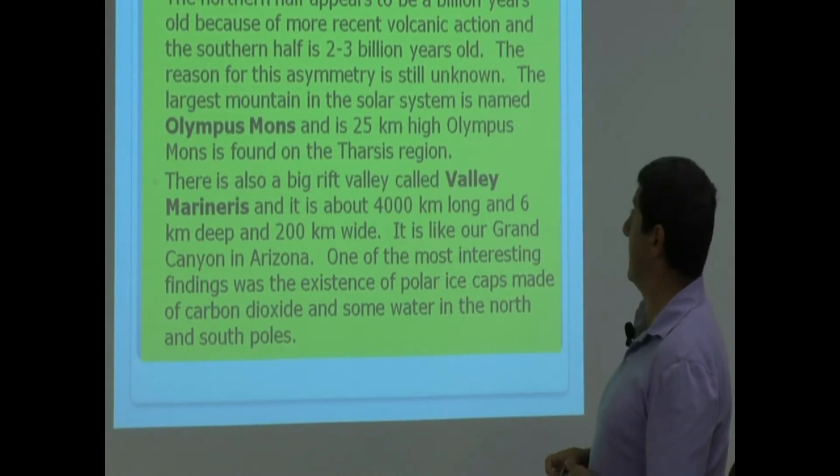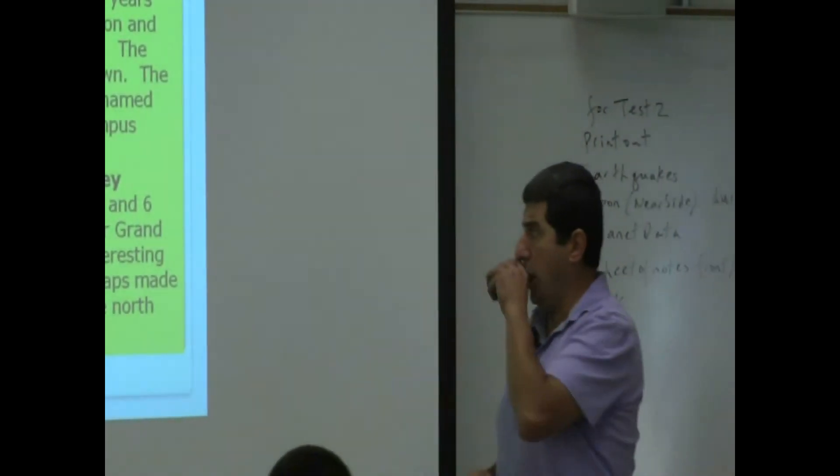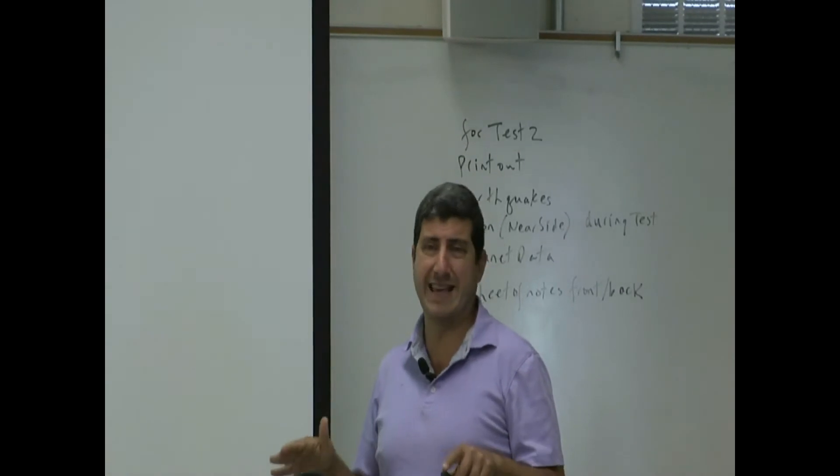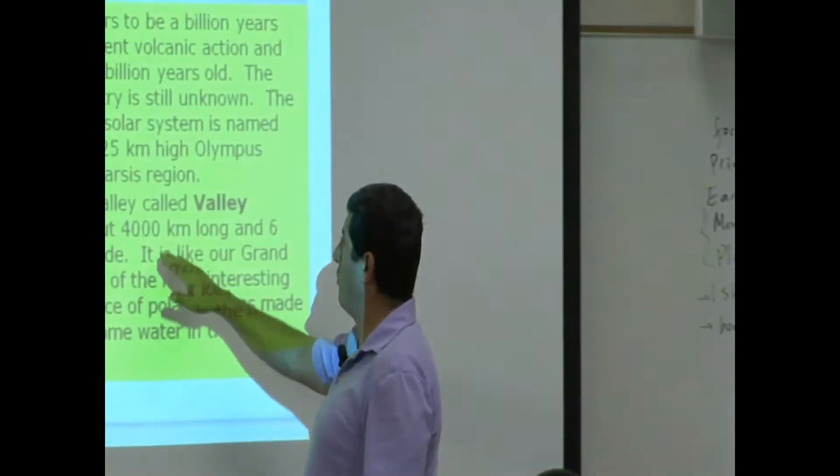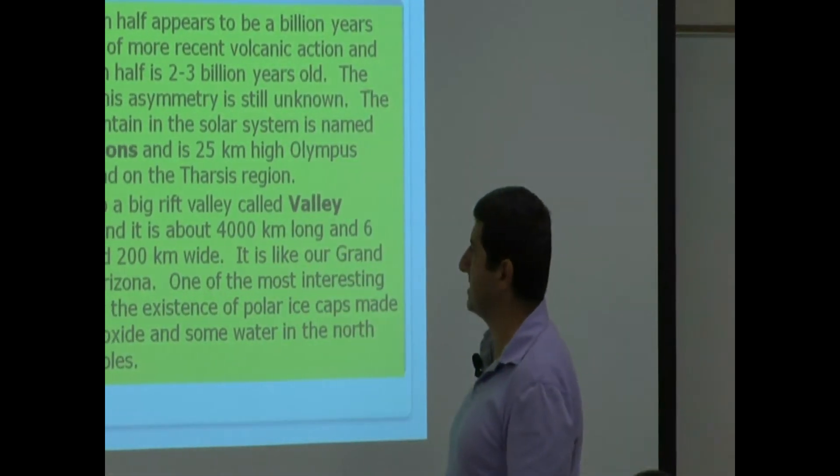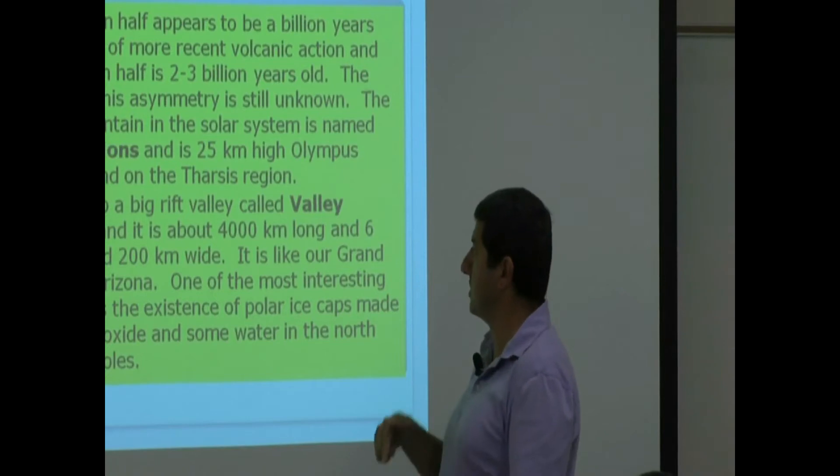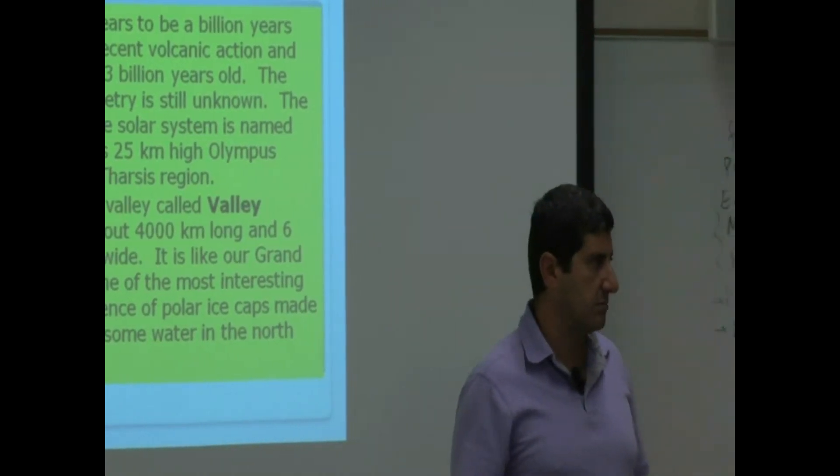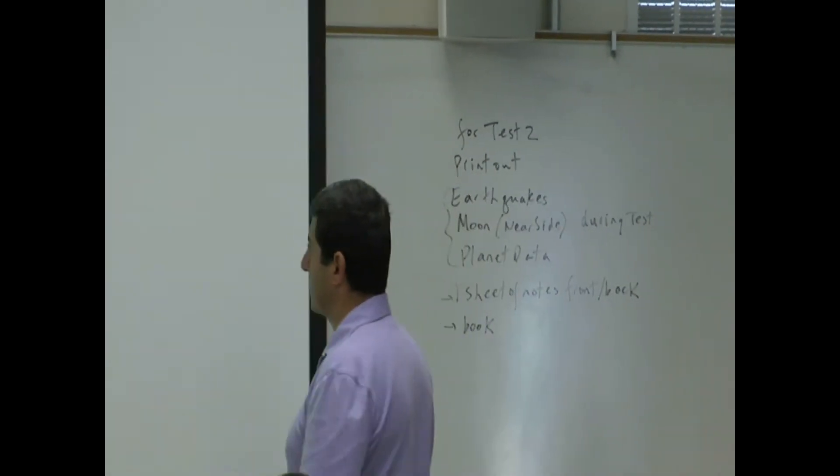There's also a big rift valley called Valles Marineris. This is very, very large. It's going to make Grand Canyon look like nothing. That's about 4,000 kilometers long and 6 kilometers deep and 200 kilometers wide. Grand Canyon will be very small compared to that. It is like a Grand Canyon in Arizona.